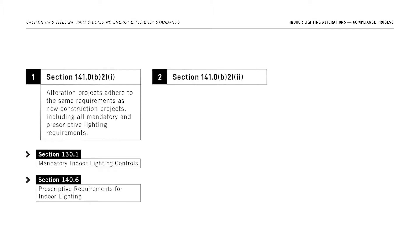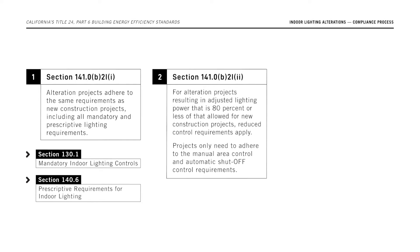Option 2: For alteration projects resulting in adjusted lighting power that is 80% or less of that allowed for new construction projects, reduced control requirements apply. Projects only need to adhere to the manual area control and automatic shutoff control requirements.